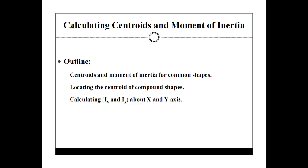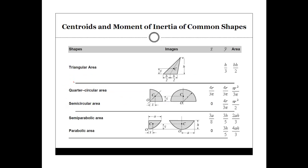Here is the outline of what we're going to do: centroid and moment of inertia for common shapes. We'll go over this, then try to locate the centroid of compound shapes, and I'll show you a quick way of calculating Ix and Iy about the X and Y axis. I'm going to show the Ix part; Iy is basically the same thing but you have to keep in mind a couple of points to get the correct answer. This table you can get in the back of any Mechanics of Materials book — I found it online. We'll use a couple of the formulas shown here, especially if we have a shape that has a circle or semicircle.